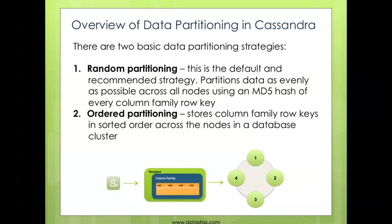There are a couple different data partitioning strategies that you can use in Cassandra. The first is the random partitioning strategy, and this is the default and recommended strategy. When you insert data into Cassandra, it's going to use an MD5 hash of the row key. Based on that row key, it's going to assign that row to a node in your cluster that's going to be responsible for it. This is the recommended strategy because it ensures an even distribution of data throughout all the nodes in your cluster.